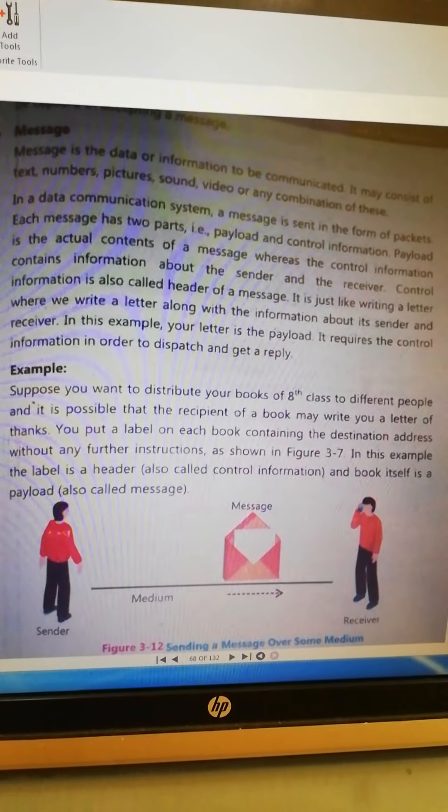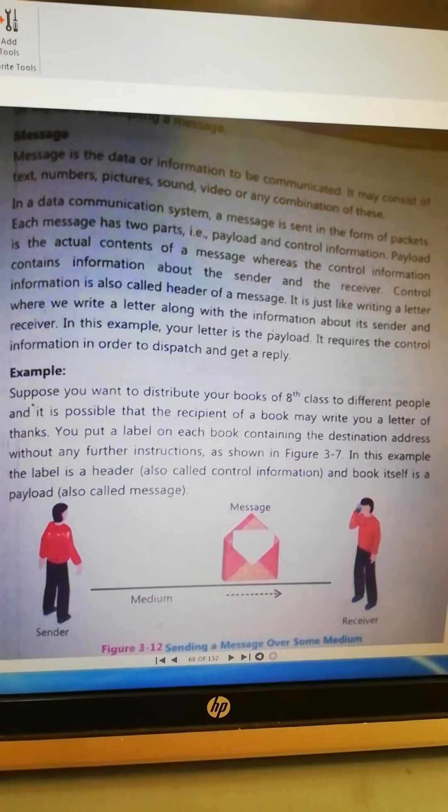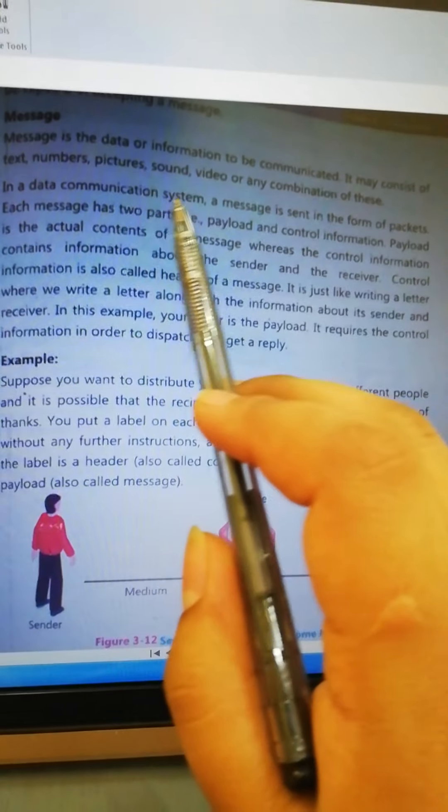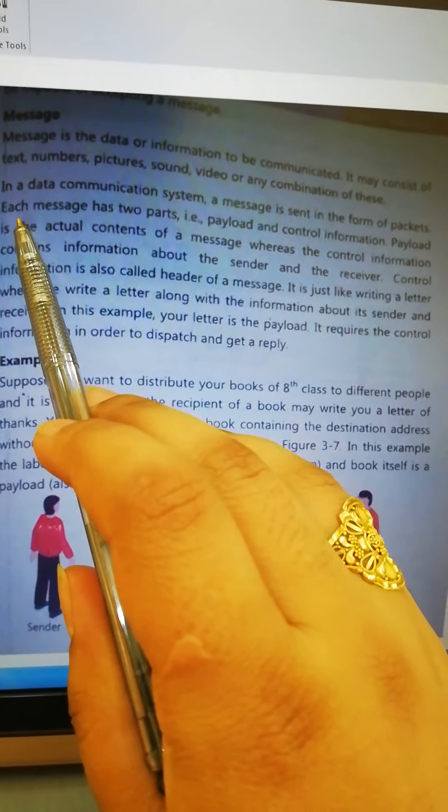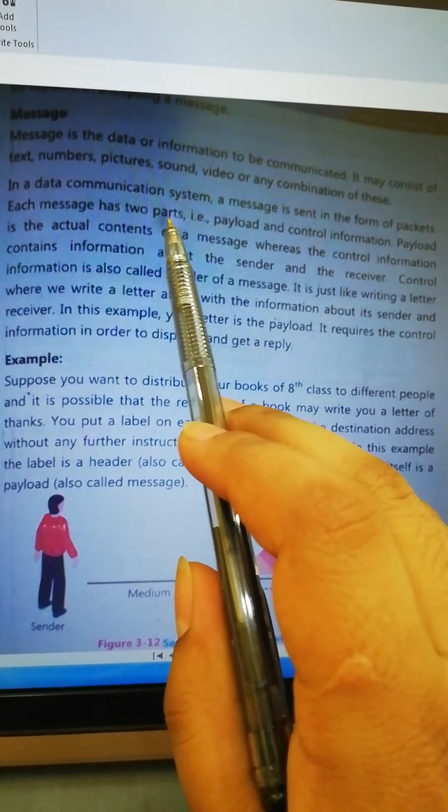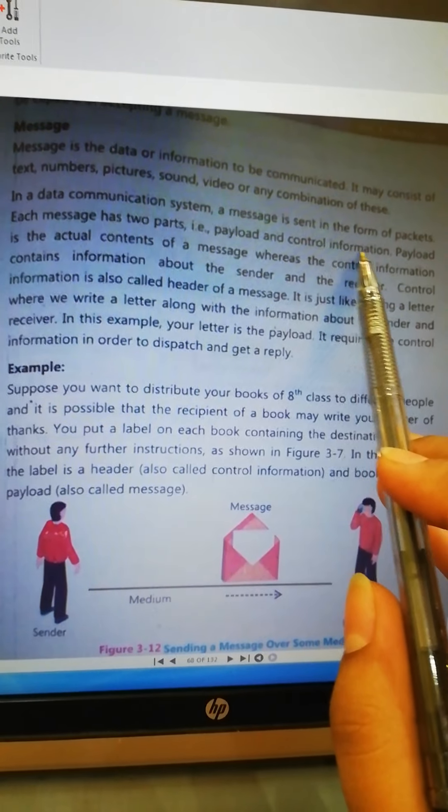In a data communication system, a message is sent in the form of packet. Each message has two parts, payload and control information.